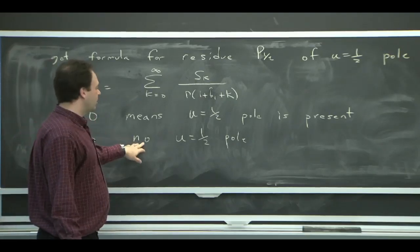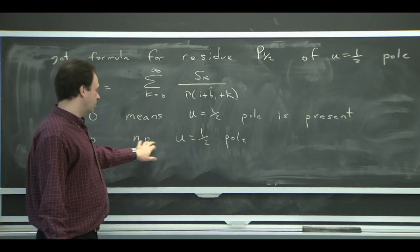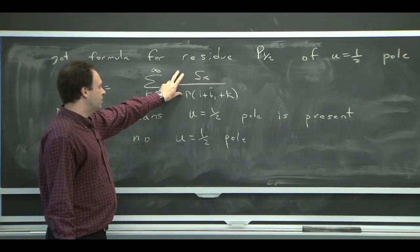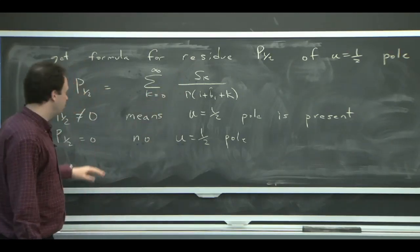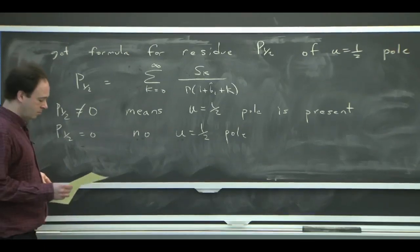And then you can very easily see that actually there's no U equals a half pole. What happens is that all the terms are canceling in this series, and you just get 0. OK?